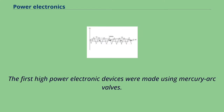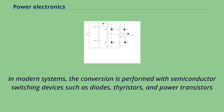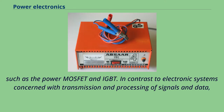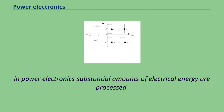The first high-power electronic devices were made using mercury arc valves. In modern systems, the conversion is performed with semiconductor switching devices such as diodes, thyristors, and power transistors such as the power MOSFET and IGBT. In contrast to electronic systems concerned with transmission and processing of signals and data, in power electronics substantial amounts of electrical energy are processed.